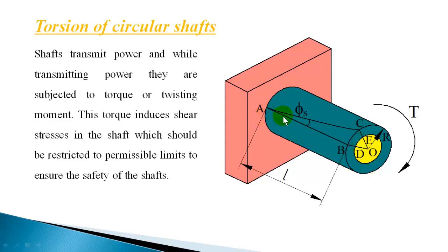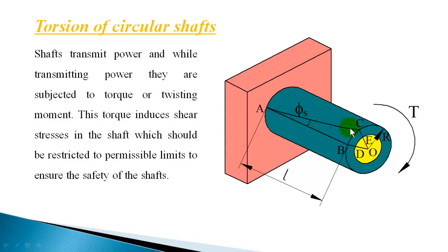I'll consider a fiber on the outer surface AB. Before applying the torque, this fiber AB is straight. Once a clockwise torque is applied at the free end, the point B moves to C. Each point on the line AB moves and takes a different position. So this fiber on the outer surface AB, after applying the torque, deforms and takes the shape AC. That is a shear deformation — the fiber undergoes a shear deformation.